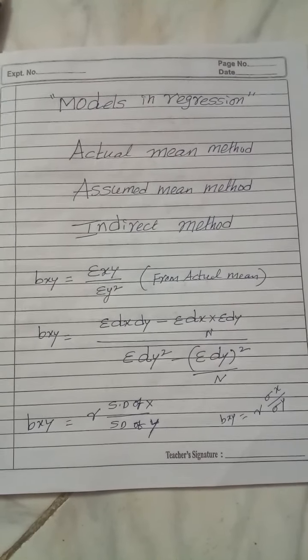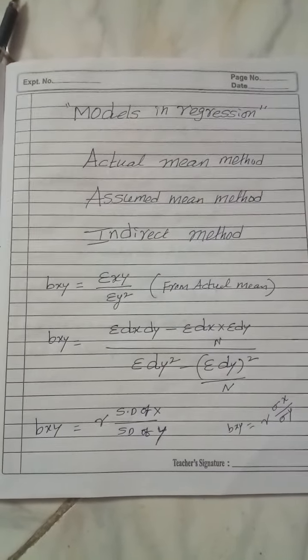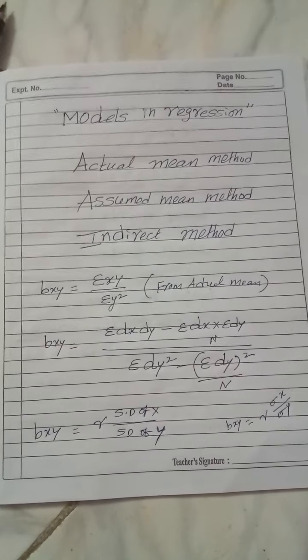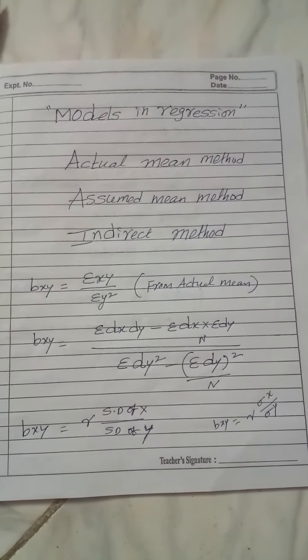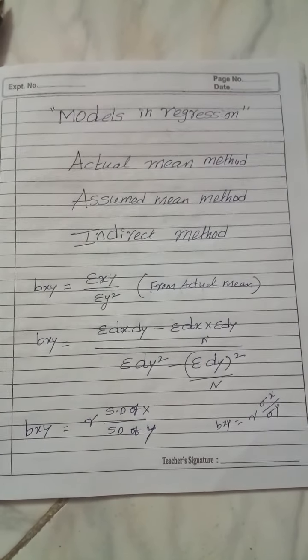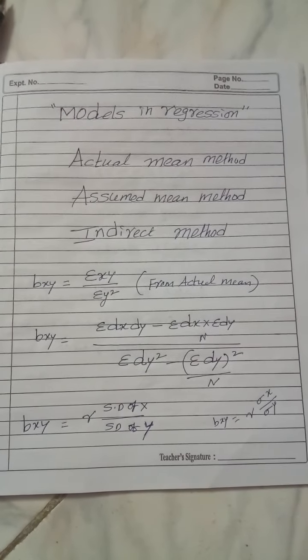In case of actual mean method, we need to calculate actual mean. In case of assumed mean, we need to take one assumed number. If they gave an assumed number, we can take that, but if it is not given, we need to select one properly. Then indirect method is like they will give standard deviation of x and y.